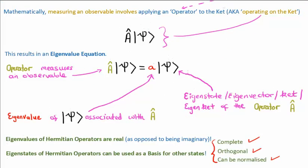Now, operators in quantum mechanics must be Hermitian. The reason is that the operators give us the value of an observable, and observables must be real numbers. So position, energy, and momentum, for example, must be real numbers. The eigenvalues of Hermitian operators are real, and that's why we use Hermitian operators to measure observables. We also get a neat thing in return: the eigenstates of Hermitian operators can themselves be used as a basis for other states, because they're complete, orthogonal, and can be normalized.